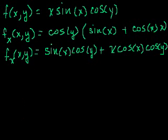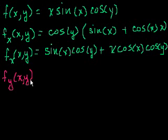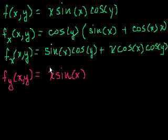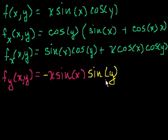Now let's take the partial in the y direction — how much does f change with respect to y if we hold x constant? Now x is a constant, so this whole x·sin(x) is just a constant number. That's the hardest part about doing these partial derivatives — getting used to saying x·sin(x) is just a constant. So we write x·sin(x) out front, and then we just take the derivative of cos(y) with respect to y, which is minus sin(y). So the partial of f with respect to y is minus x·sin(x)·sin(y).